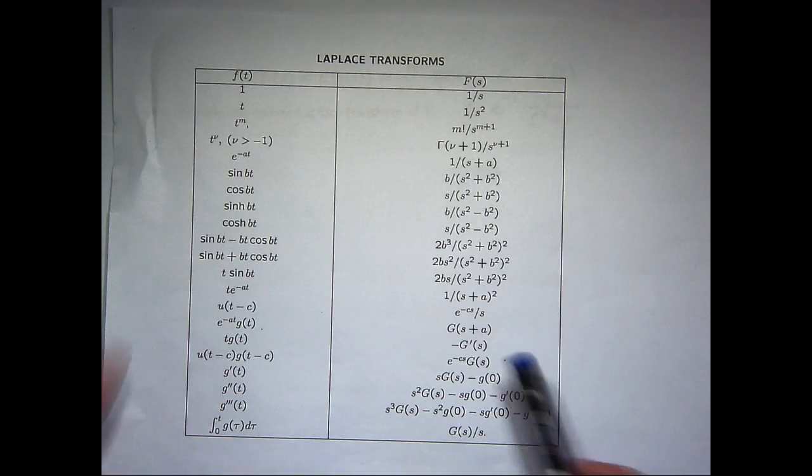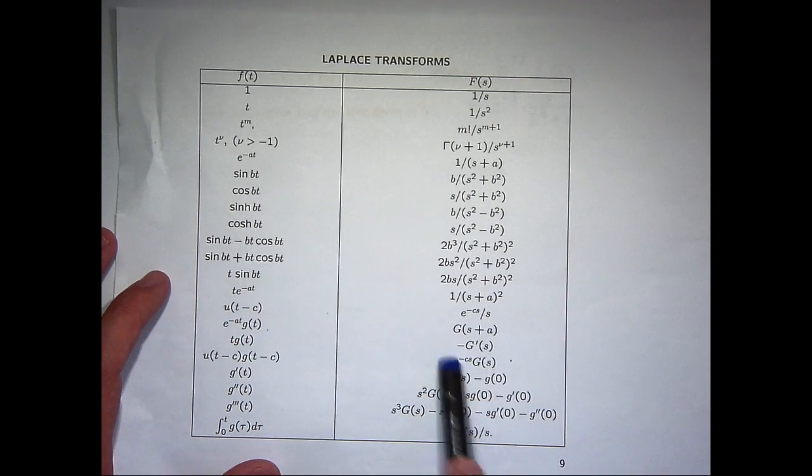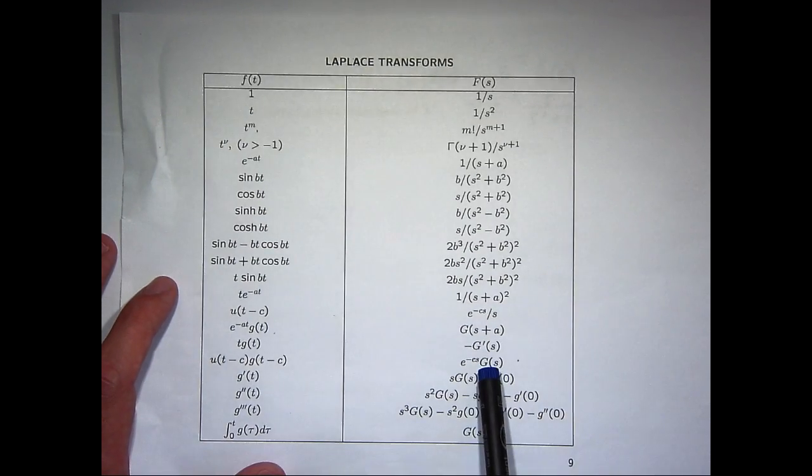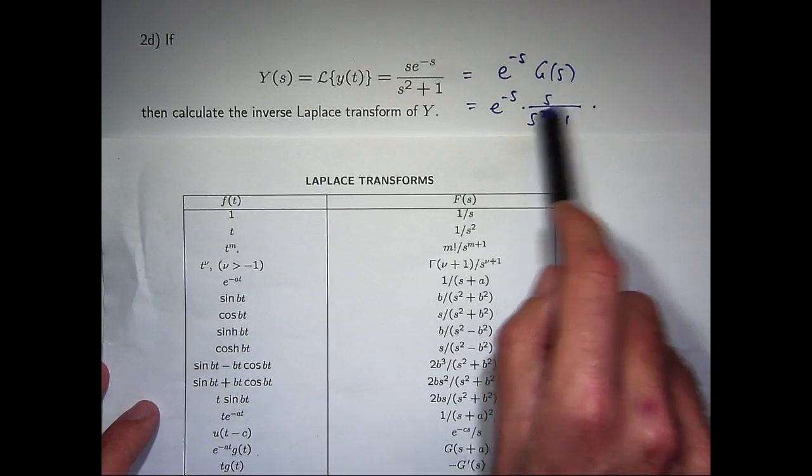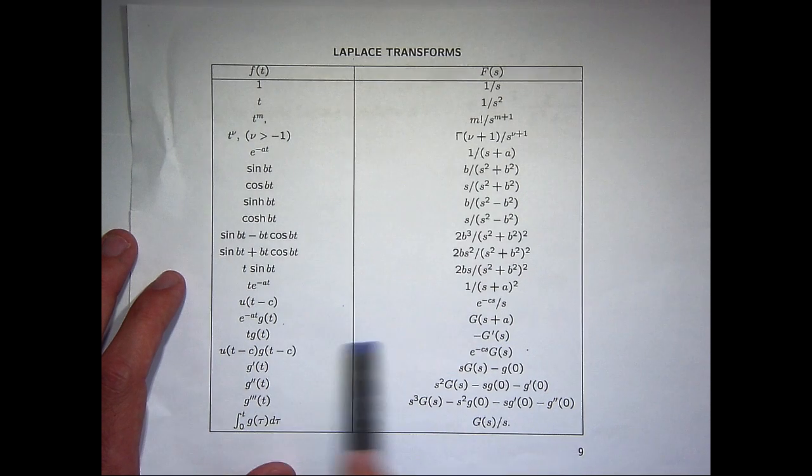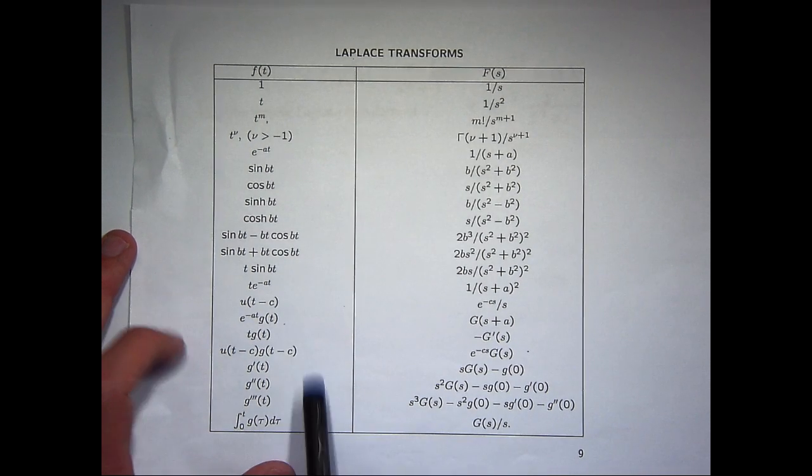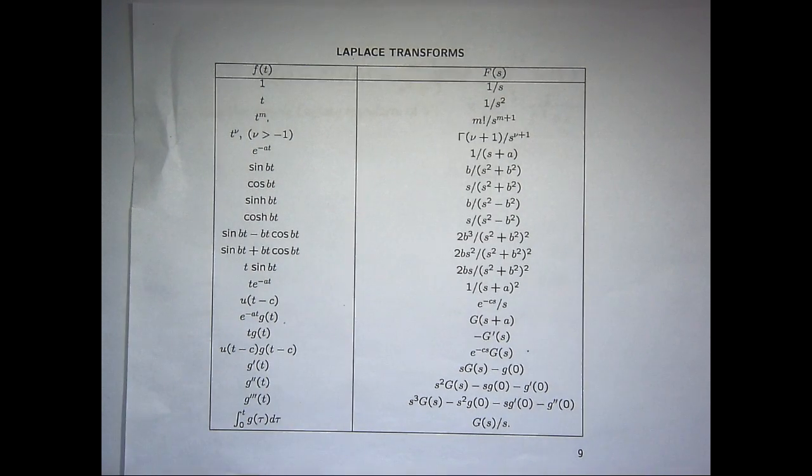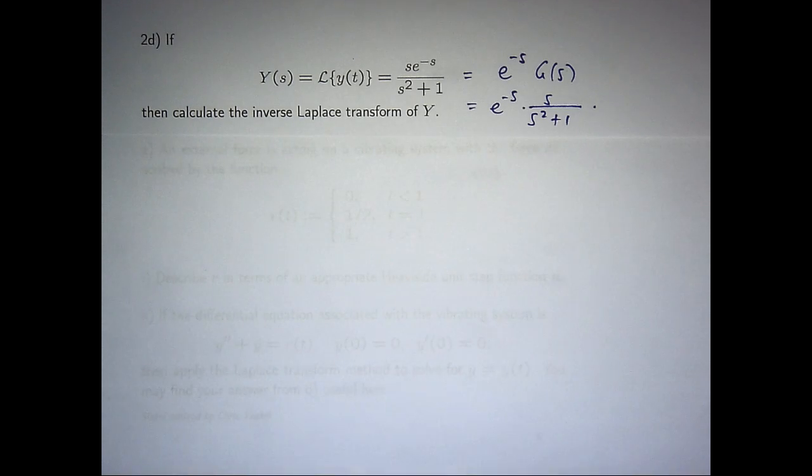So we're over here with a special c, c equals 1, a special big G, big G equals s on s squared plus 1. Let's apply this second shifting theorem and calculate the inverse transform. To do that, first of all, we get little g of t. Then we shift it, then we multiply through by the appropriate Heaviside step function. That's the u, u of t minus c.